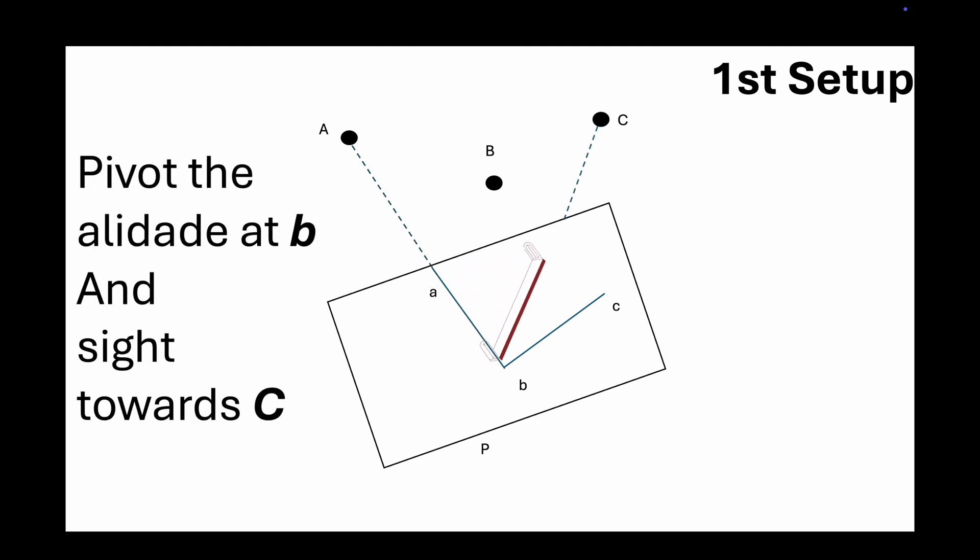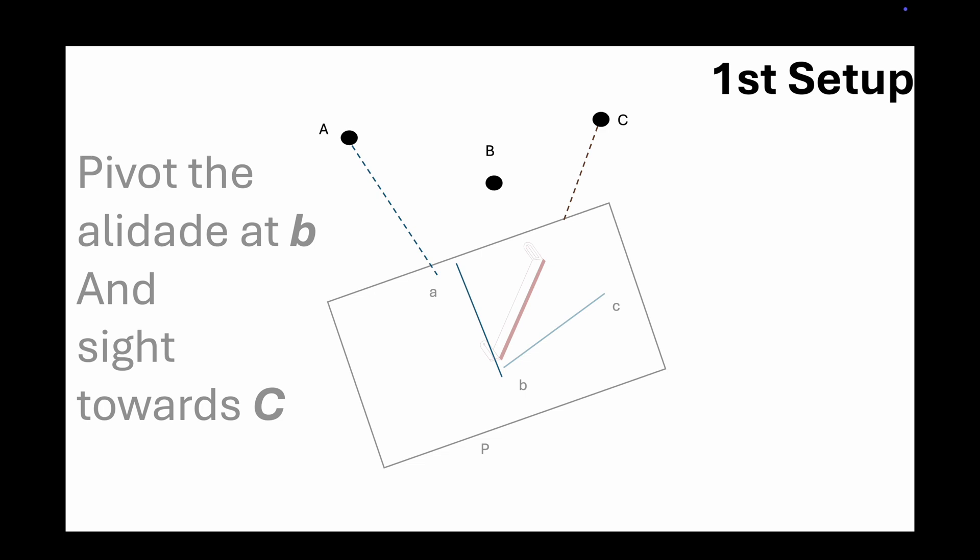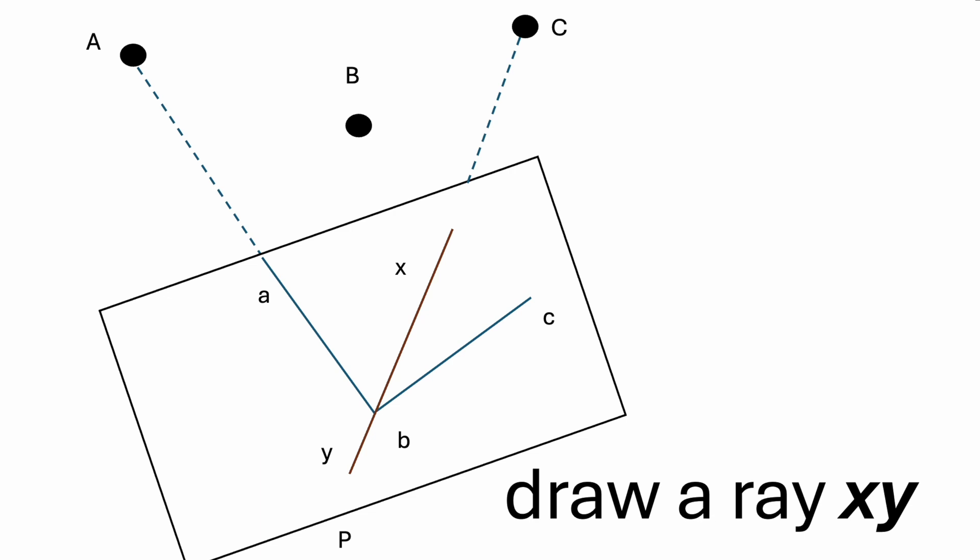Pivot the alidade at B and sight towards C. This gives us the ray XY.